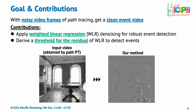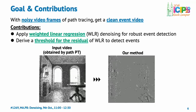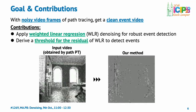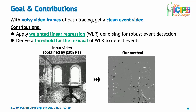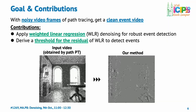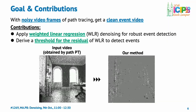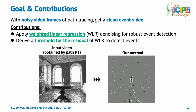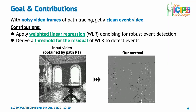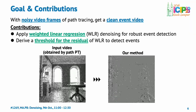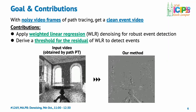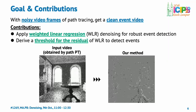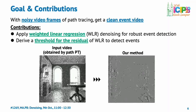In our research, we propose a method to generate clear event videos from input videos with a significant amount of noise. We use information obtained during path tracing and implement a weighted linear regression problem. This approach not only reduces the noise in the video, but also allows us to theoretically derive a new threshold for event detection based on the residuals of the weighted linear regression. Let's see the video here for the result of our approach. As this video shows, our method has successfully obtained an event video that is much cleaner than that of a conventional technique. From the next slide, I'll elaborate on the processes of our method.